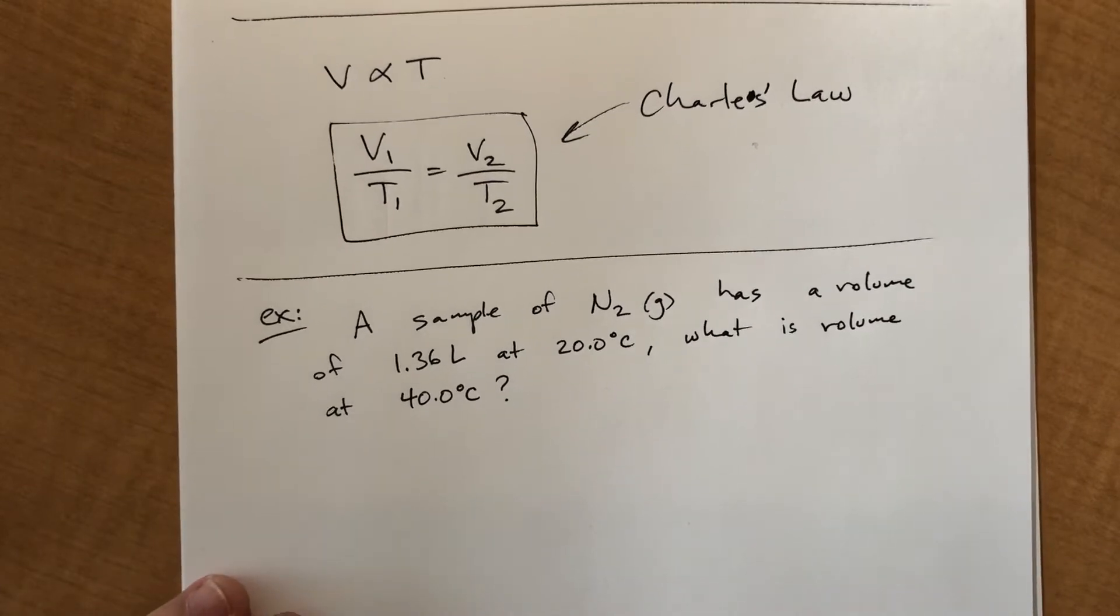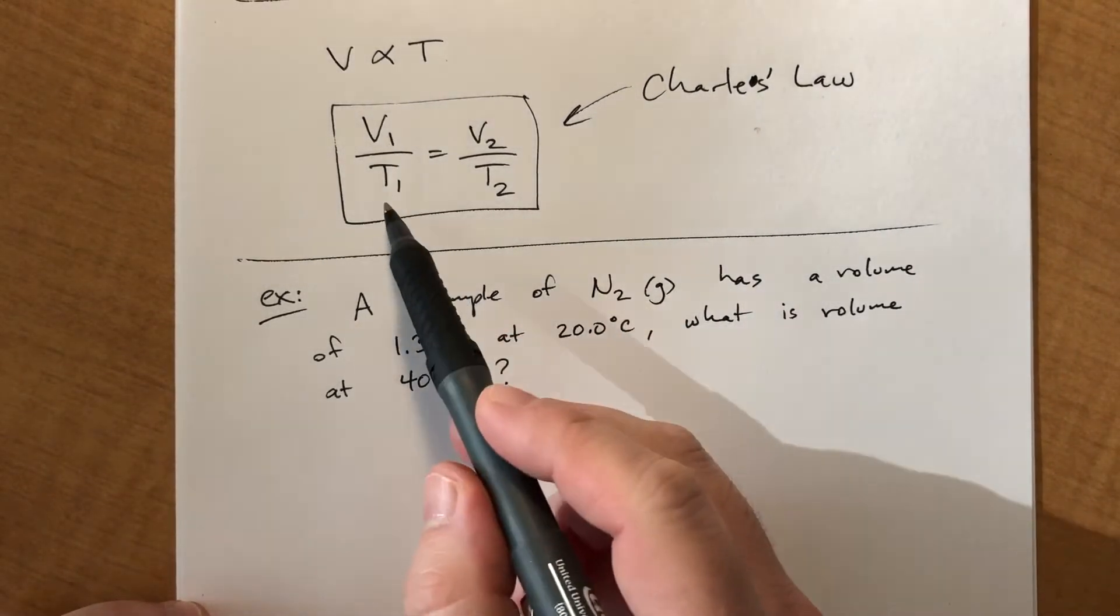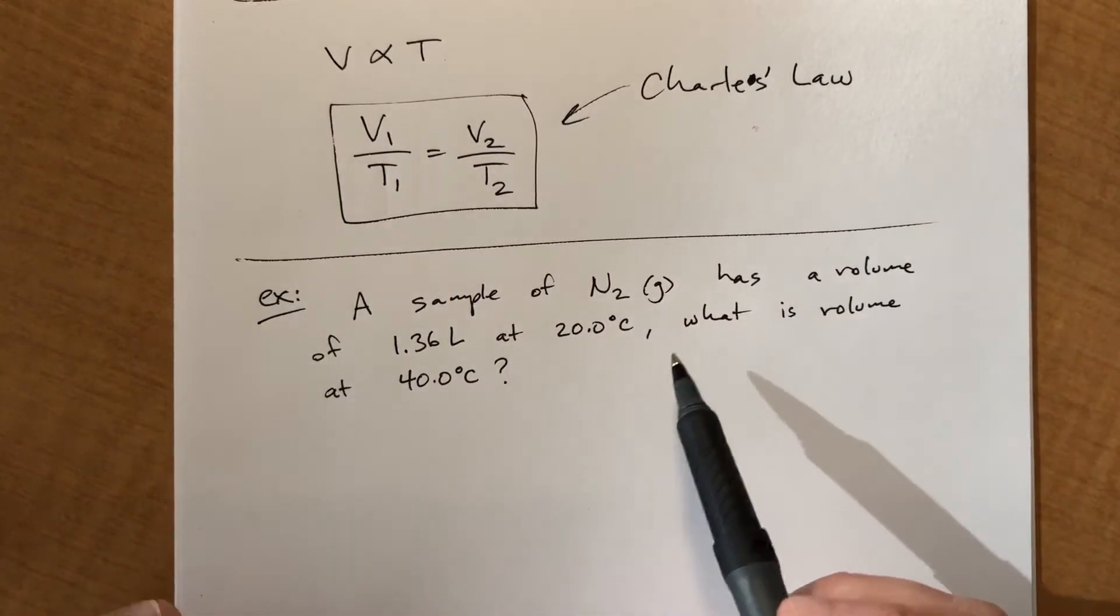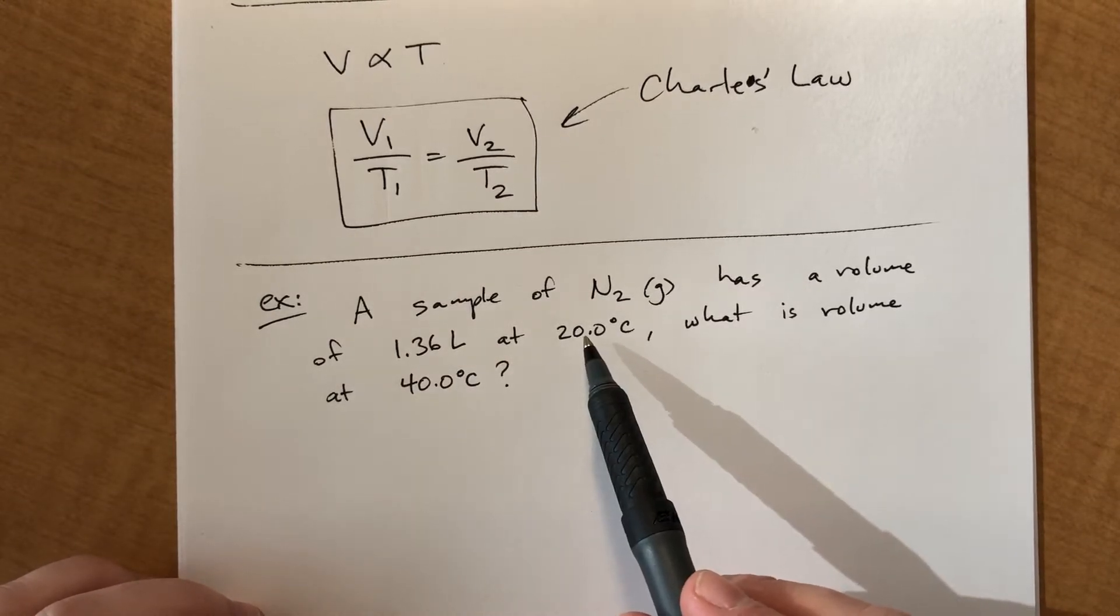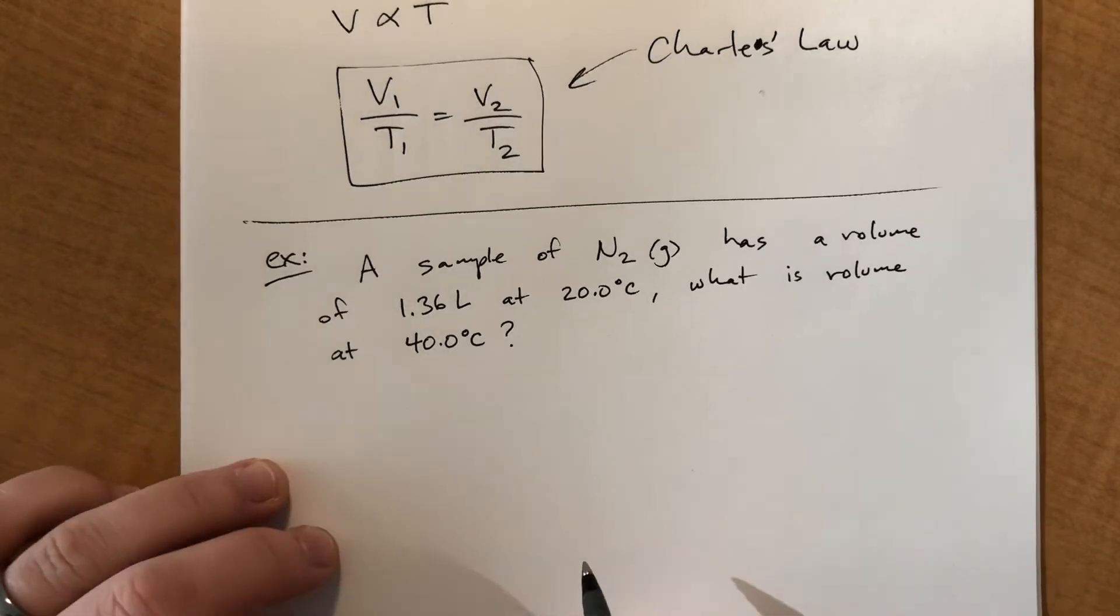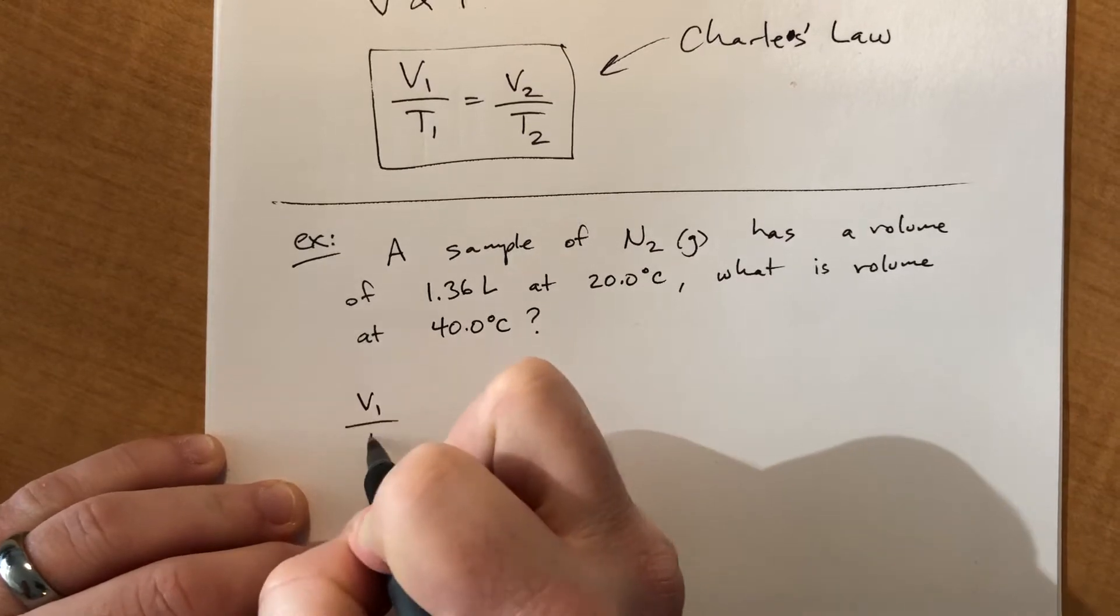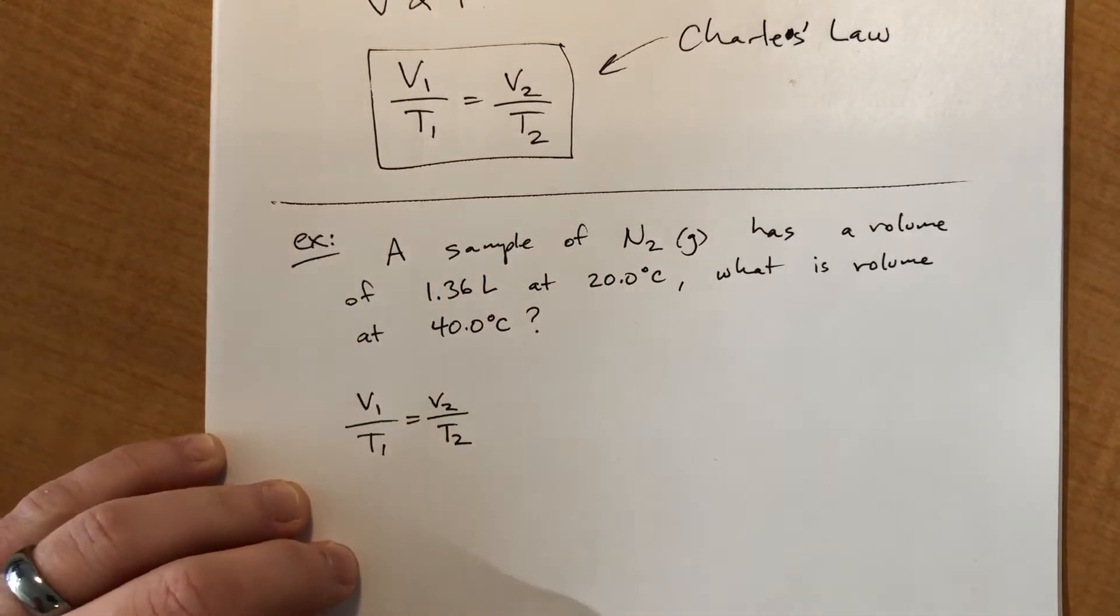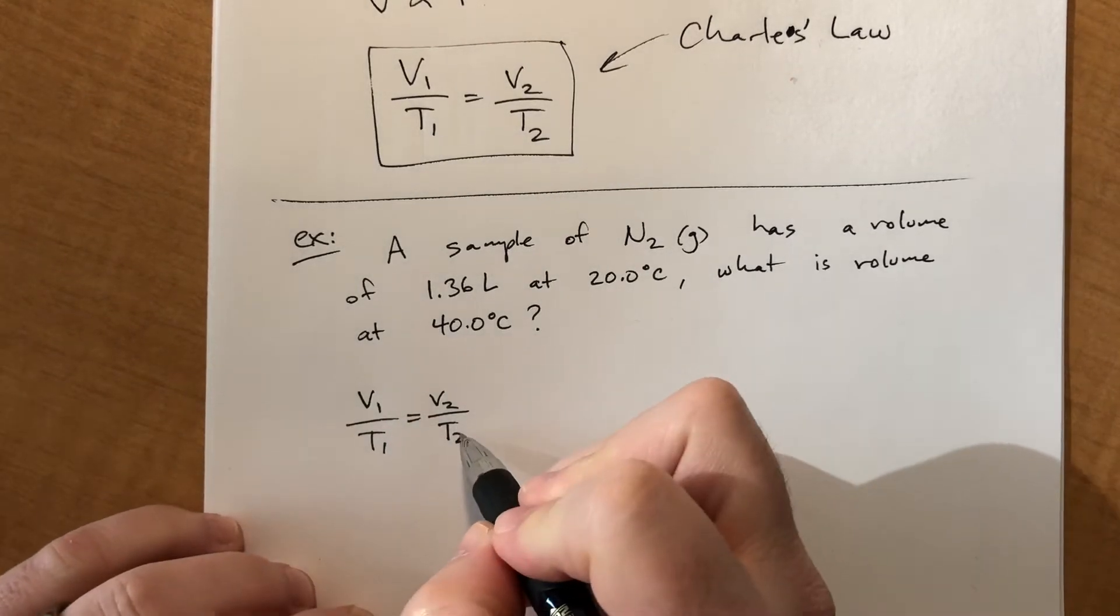So we basically have V1 and T1 and V2 and T2. We have four things. We have three of them, so we solve for the fourth one. Essentially, we have initial conditions, V1 and T1. We're solving for V2. We know T2. So I'm going to show my work for the algebra just to show how it works here. So we're solving for V2. That's the one we don't know. So we need to get rid of this T2.